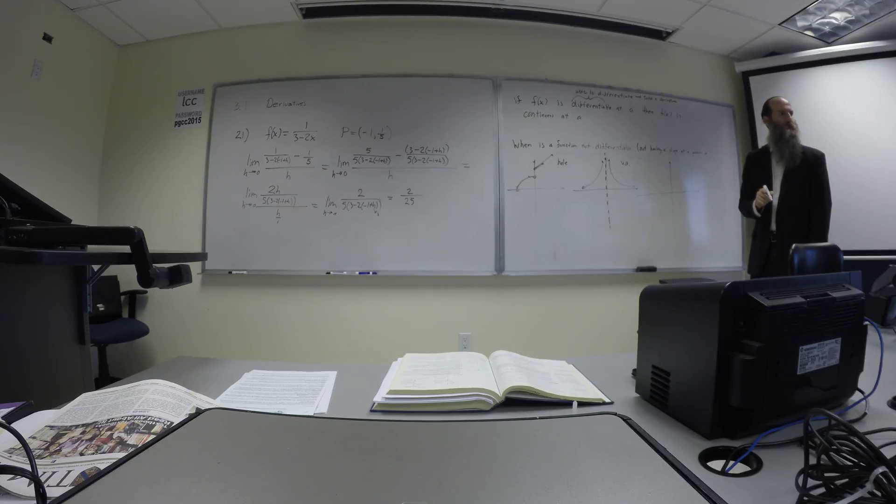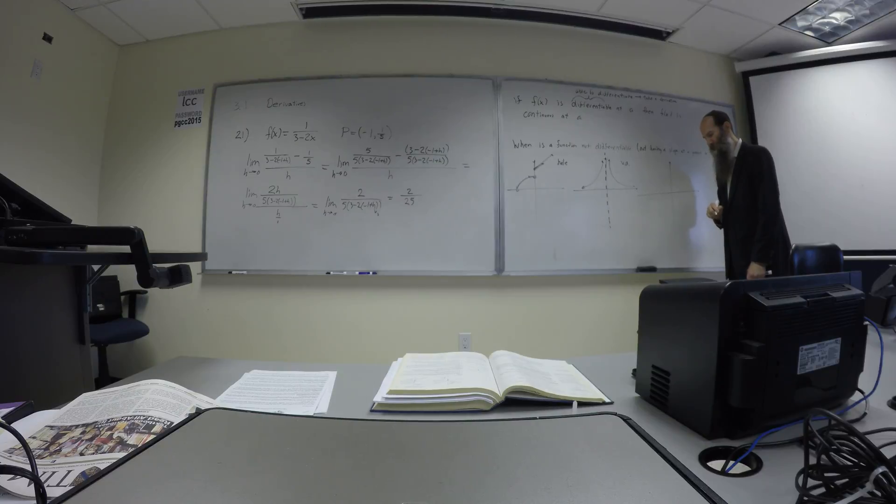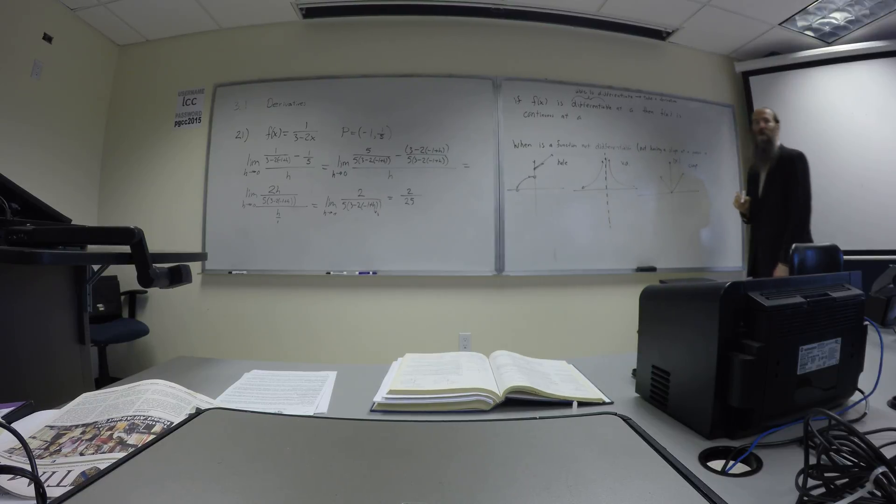Who said the other case? What did you say? Corner. Corner. Yeah. All right. Corner. Corner is an important one. And the classic case of the corner is going to be absolute value function. You want to keep that in mind. We're going to call this, instead of a corner, we're going to call it a cusp. Okay? Cusp.